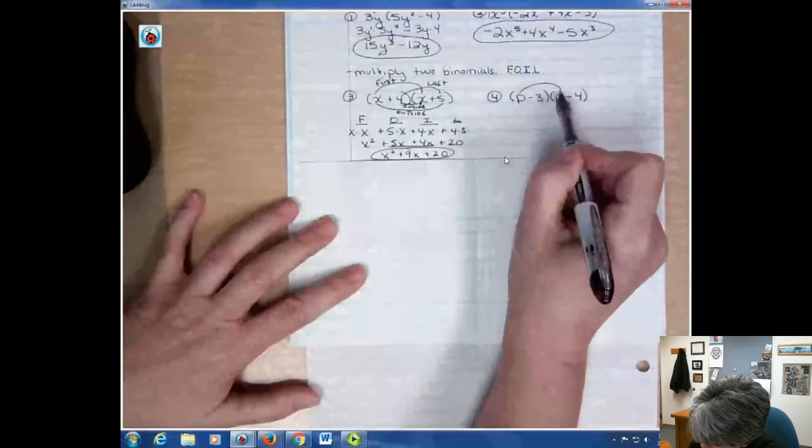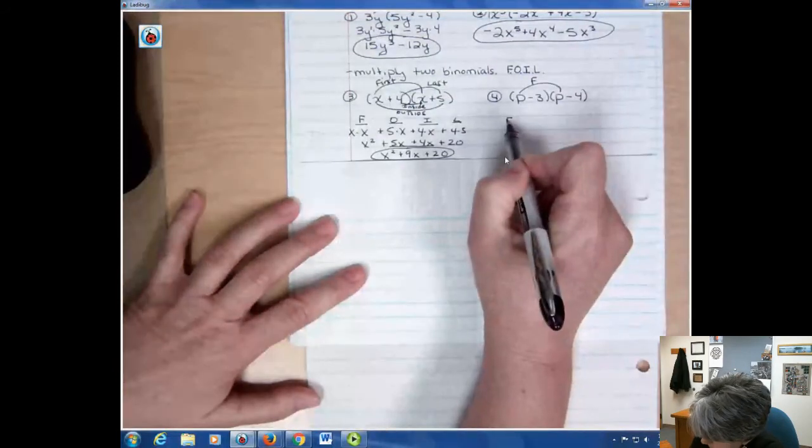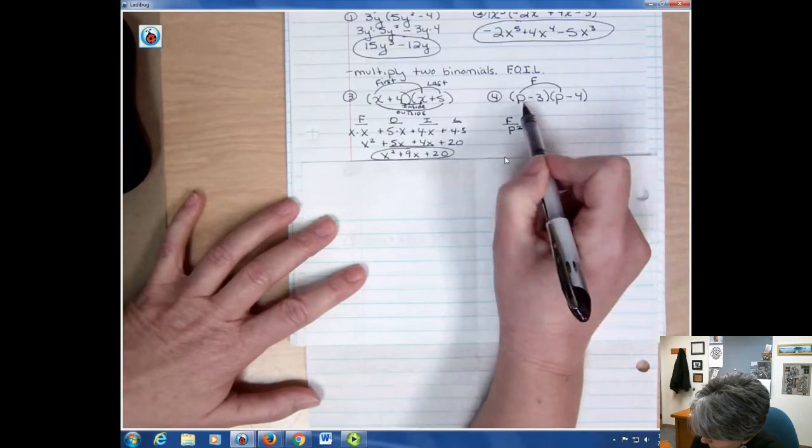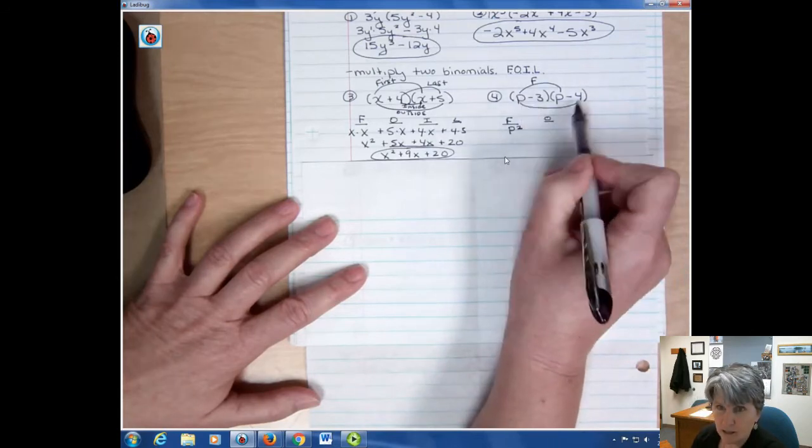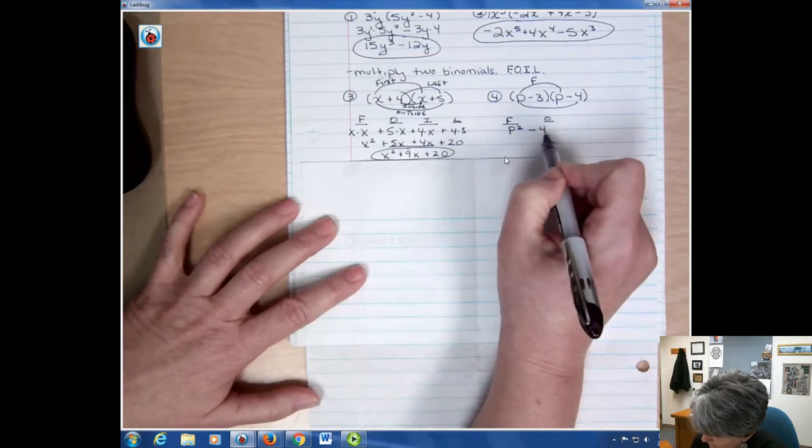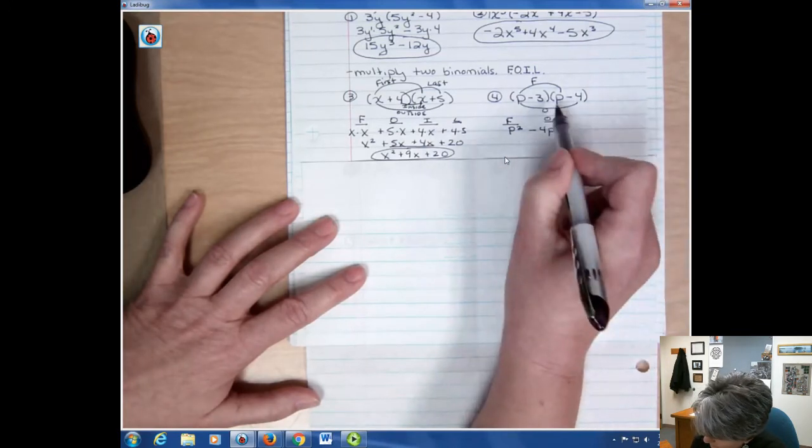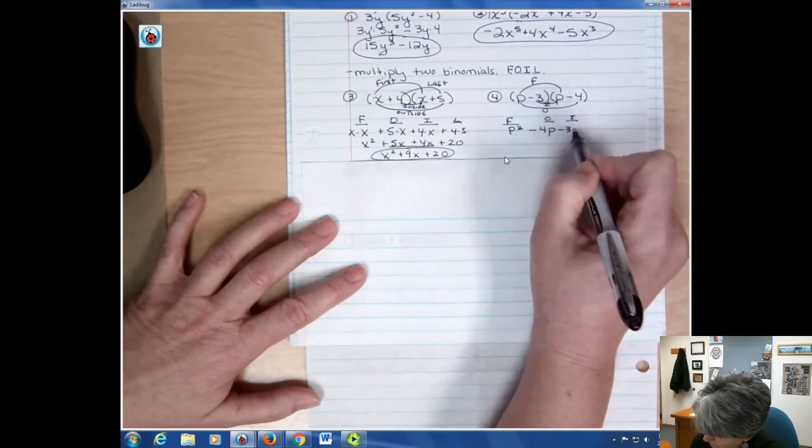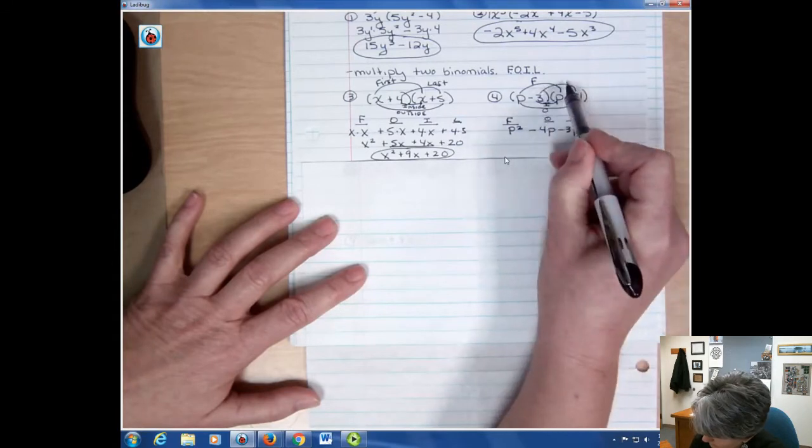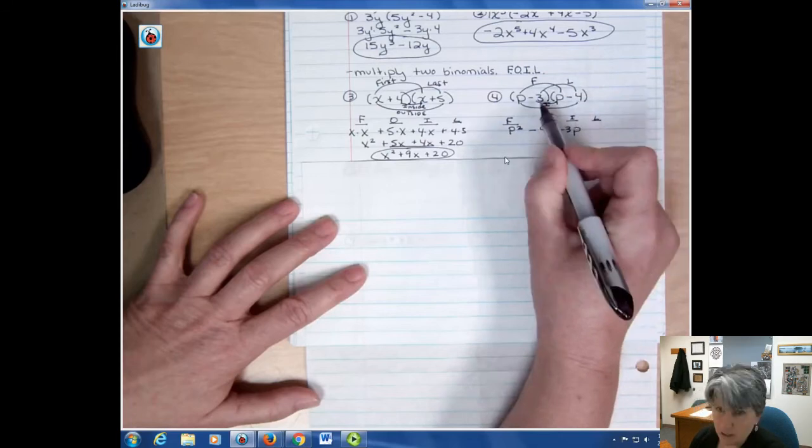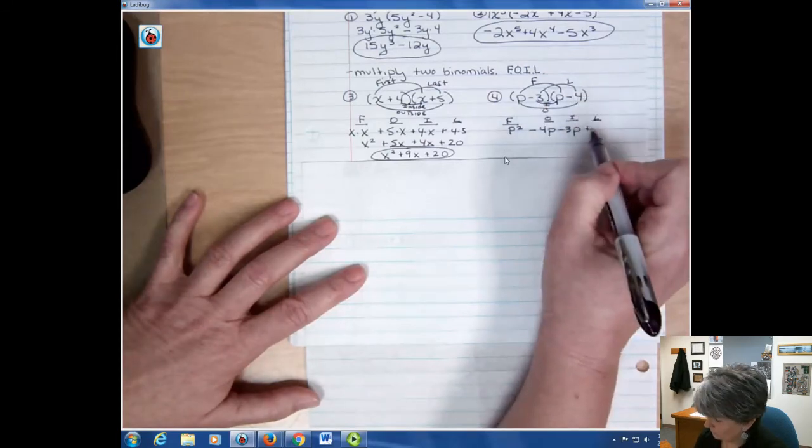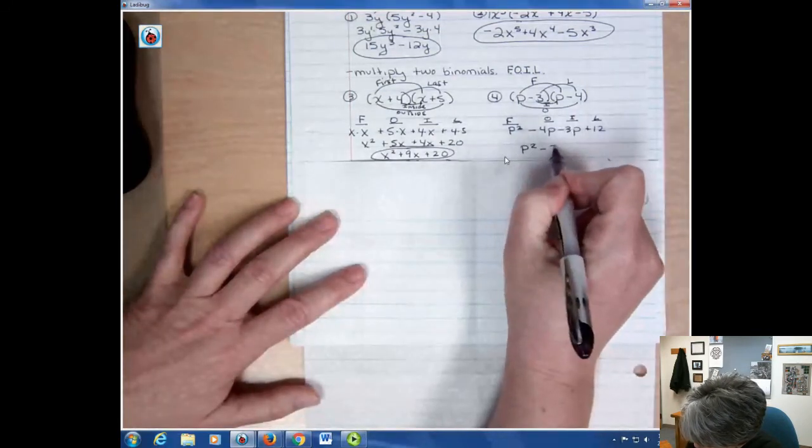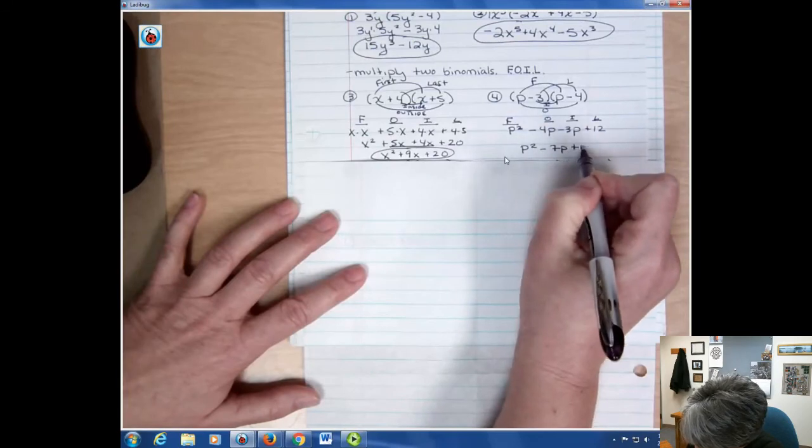So we have our first. And what's the first going to be? Well, the first is p times p, which is p squared. Then we have outside. Outside is p times negative 4, which is negative 4p. Then we have inside. Inside is negative 3 times p. And finally we have last, which is negative 3 times negative 4, or plus 12. And when I combine my like terms, I have p squared minus 7p plus 12. And that is the final answer.